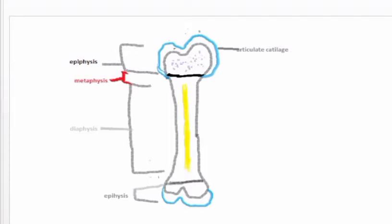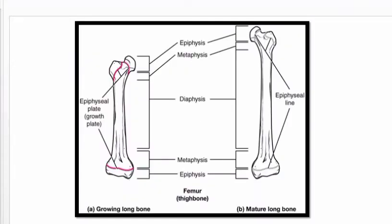Bone has many functions and consists of three parts: epiphysis, diaphysis, and metaphysis. The diaphysis is the central shaft. The epiphysis forms both ends of the bone. Between the epiphysis and diaphysis there is a growth plate called the metaphysis - referred to as the metaphysial plate when it is still a plate, and as the epiphysial line once it fuses. The epiphysis is spongy, the diaphysis is compact, and within the diaphysis is the medullary cavity containing bone marrow.